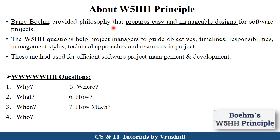First, let's understand what exactly the W5HH Principle is. The scientist Barry Boehm invented this W5HH Principle for preparing an easy and manageable software design for a particular software project development. Basically, this W5HH Principle helps the project manager in the planning phase of the software development life cycle. This principle guides the project manager for setting objectives, deciding timelines and schedules, managing responsibilities and roles, management styles, technical approaches, and different resources in a particular project. Basically, this W5HH Principle is used for efficient software project management and development.